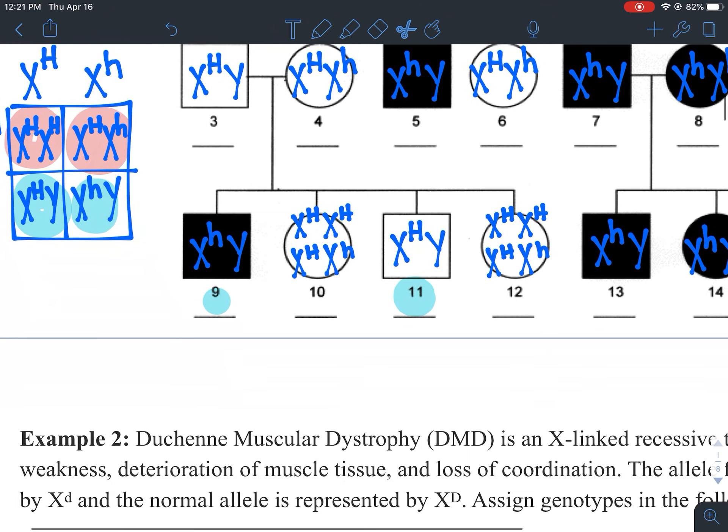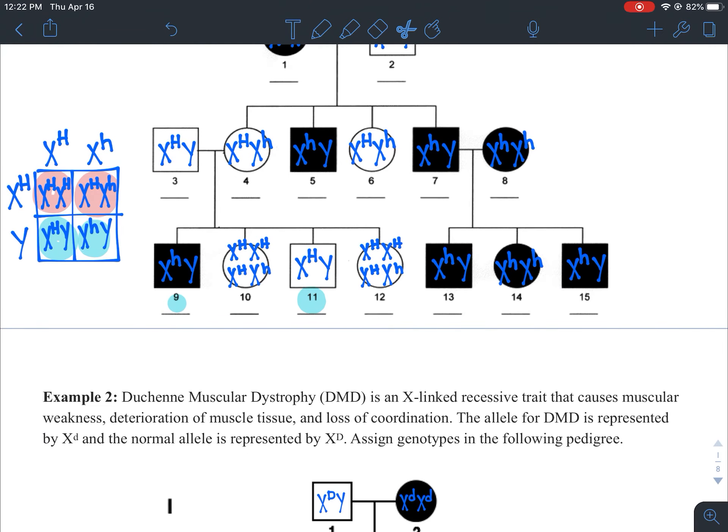Now, how could we narrow that down? In the future, if individual 10 and 12 were to have offspring, we might be able to determine based on what their offspring are, what those individuals' genotypes were. We could narrow it down. But that's not what we're doing here. We're not given that information.